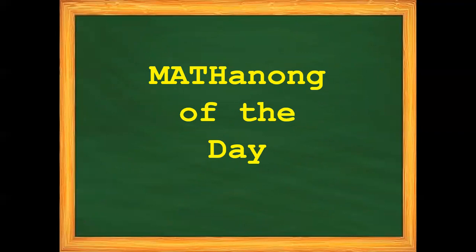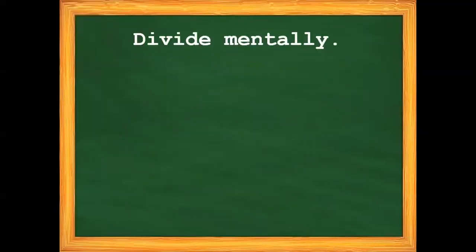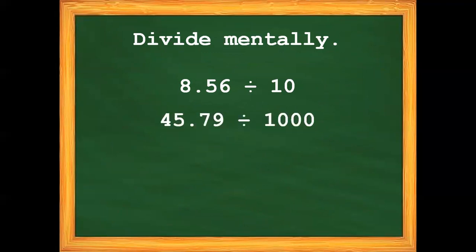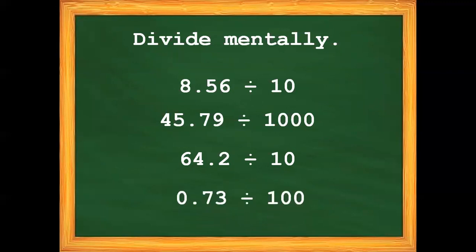Get your pen and paper and list down the questions of the day. Number 1: 56 hundredths divided by 10. Number 2: 45 and 79 hundredths divided by 1,000. Number 3: 64 and 2 tenths divided by 10. Number 4: 73 hundredths divided by 100.